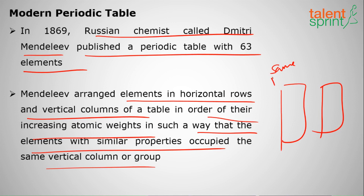Elements with similar properties occupied the same vertical group. The same vertical group will have same properties - all gases, all metals - and they have increasing atomic weights.